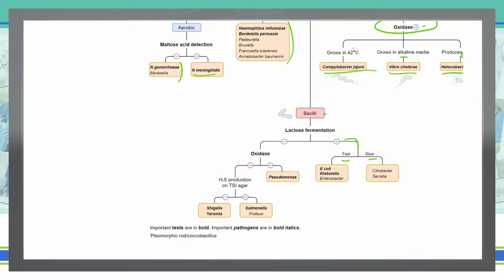The speed of that lactose fermentation will determine what we're dealing with. E. coli, Klebsiella, and Enterobacter are fast lactose fermenters. Citrobacter and Serratia are slow lactose fermenters.